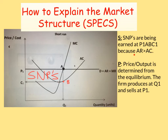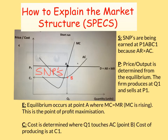P stands for price and output, which is determined from the equilibrium — the big black spot we call point A. The firm produces Q1 and sells at P1. That covers the S and P parts of SPECS.